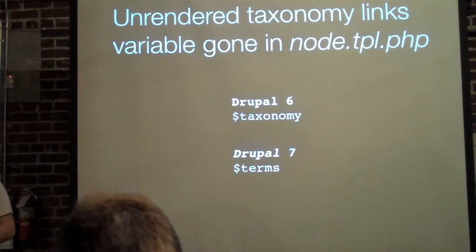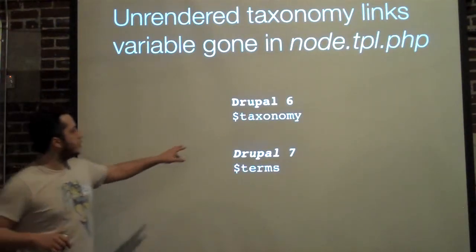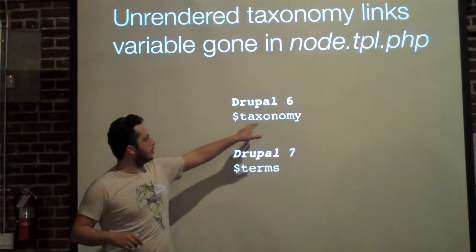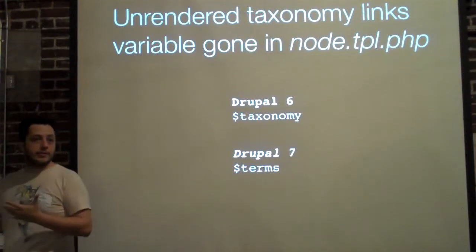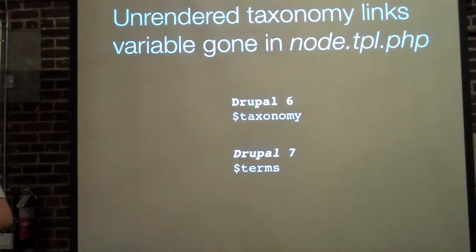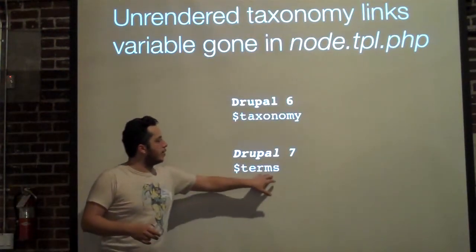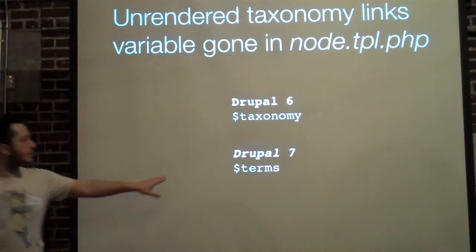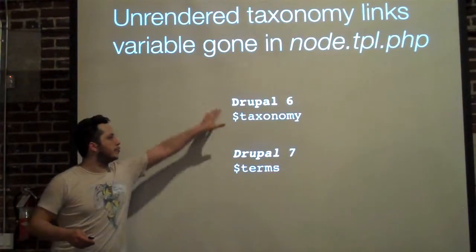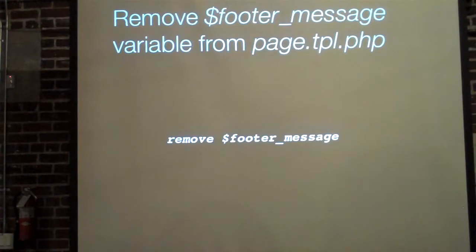Unrendered taxonomy links are now unavailable to a node template file. Some people use the PHP variable called taxonomy, but it's unfiltered and a security risk. So now everyone is just sticking with 'terms' in Drupal 7. Terms was available in Drupal 6, but now in 7 only terms is really allowed.